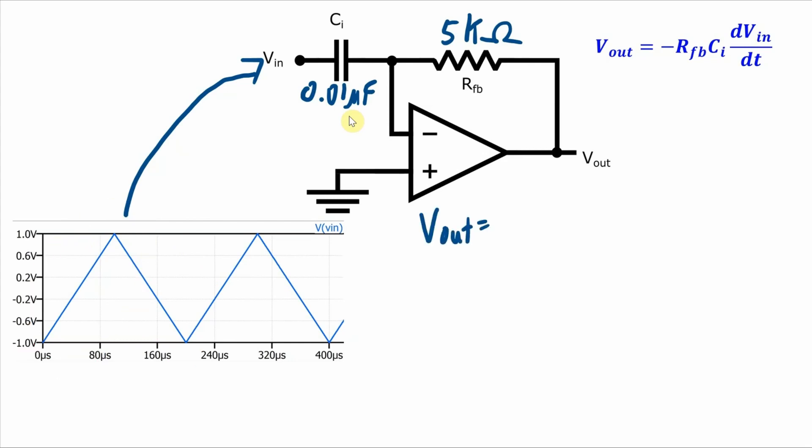So we get Vout, well it's this equation, but if we plug in those numbers for Rfb and Ci, times the rate of change of the input voltage over time. So the input voltage is going from one volt minus one volt up to one volt.